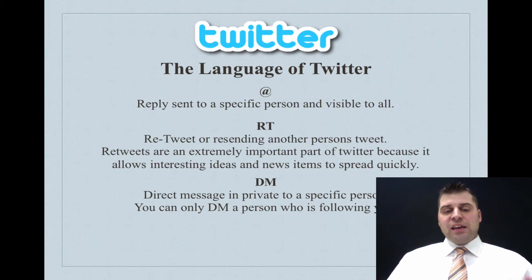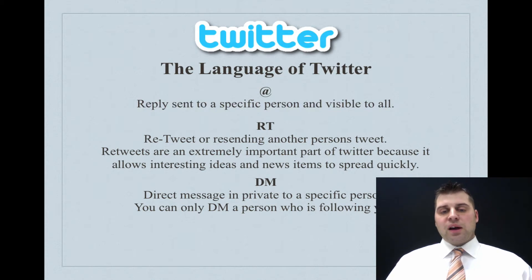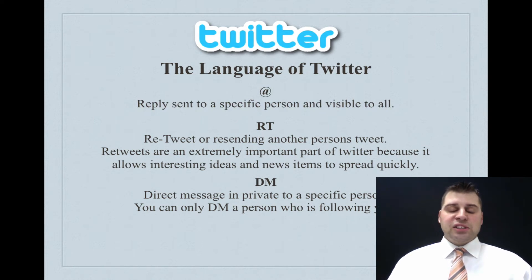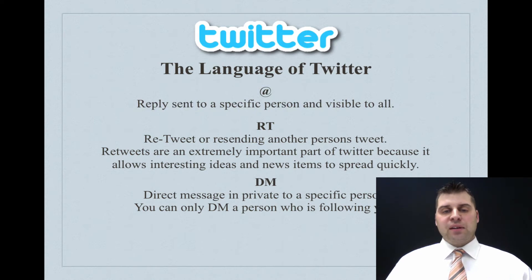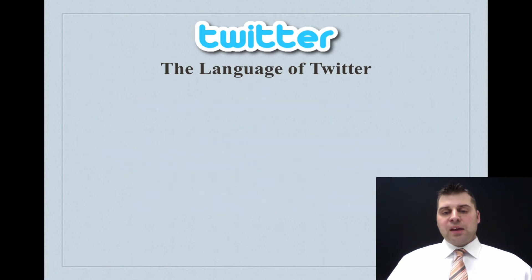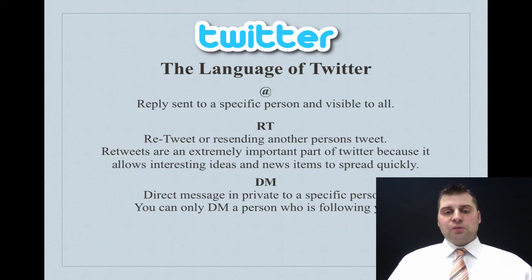A DM is a direct message, and this is probably the only private part of Twitter. To have a DM conversation, you have to be following someone and that someone has to be following you. Then you can send a private 140-character tweet to someone. For example, you might not want to put your Skype name or cell phone number out to the world in a transparent tweet, because really, everything on Twitter is public and transparent — it's like yelling it out the front door of your house or school.